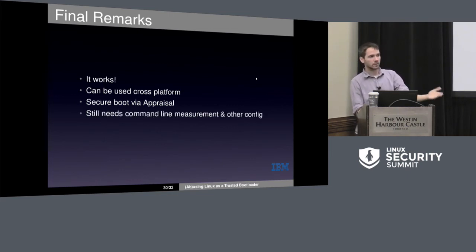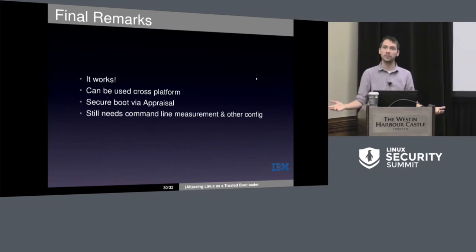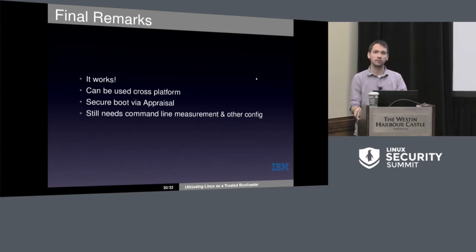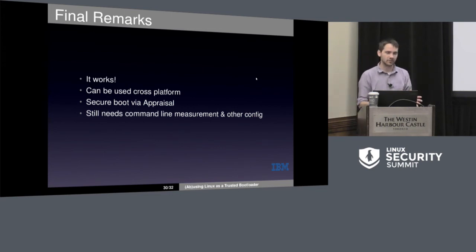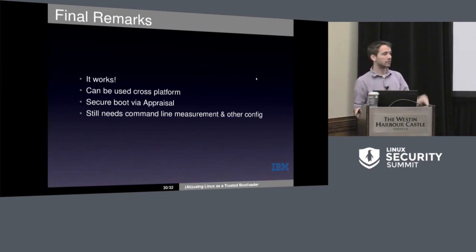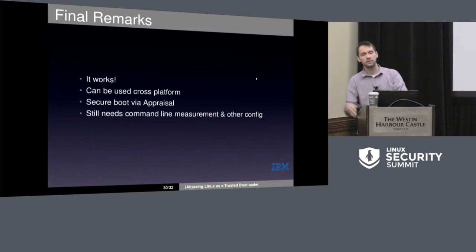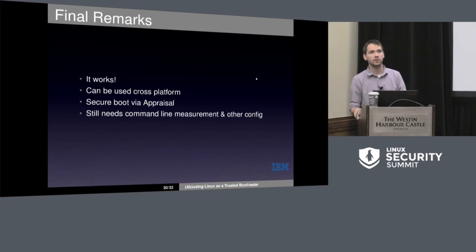Some things we still need are command line measurement — this was brought up in previous talks too. We need some kind of way to measure the configuration, since the command line can change a lot of the options or way a kernel runs. IMA's not as good at measuring buffers, unfortunately. Same goes with other config — for example, Pettiboot has options to maybe automatically boot to network versus the hard drive. That option should probably be measured in there somewhere, and again that would require some kind of buffer measurement.